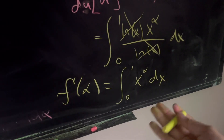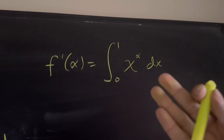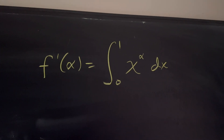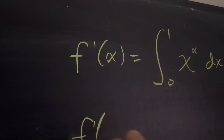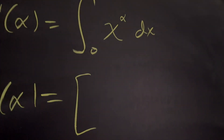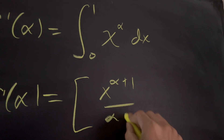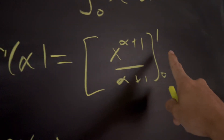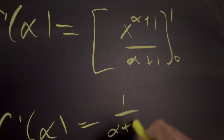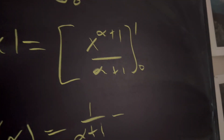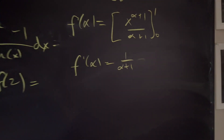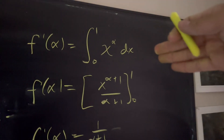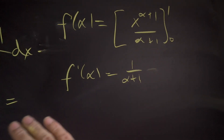Now we integrate with respect to x, treating alpha as a constant. Using the power rule, we get f prime of alpha equals x to the (alpha plus 1) over (alpha plus 1), evaluated from 0 to 1. Applying the fundamental theorem of calculus, we plug in 1 for x and get 1 over (alpha plus 1), and plugging in 0 gives 0. So f prime of alpha equals 1 over (alpha plus 1). We took the derivative with respect to alpha, integrated with respect to x, and now have a simple function with alpha as the input.